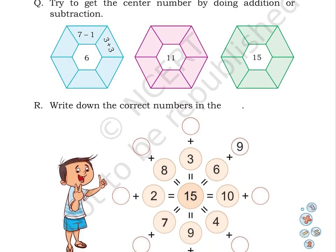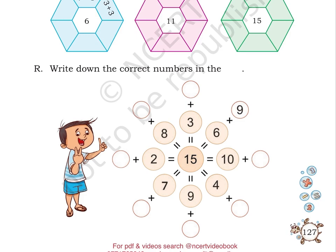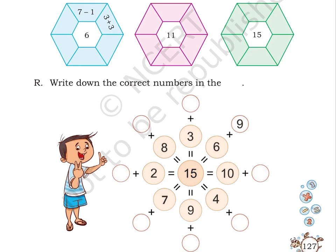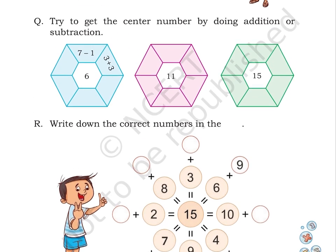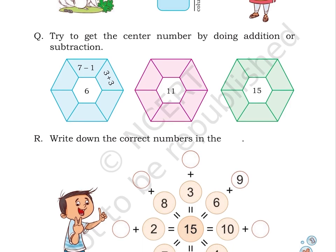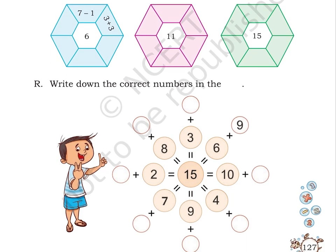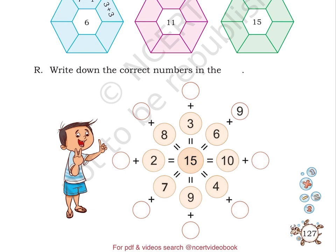Puzzle R: Write down the correct numbers in the blank circles. Here, we have number 15 given in the center. It is written inside a circle. Next to number 15, we have 8 equal to signs. These 8 equal to signs lead to numbers 8, 3, 6, 10, 4, 9, 7, 2.